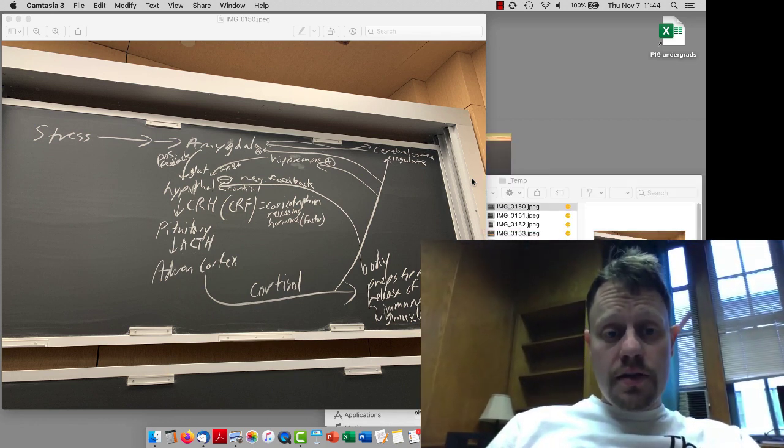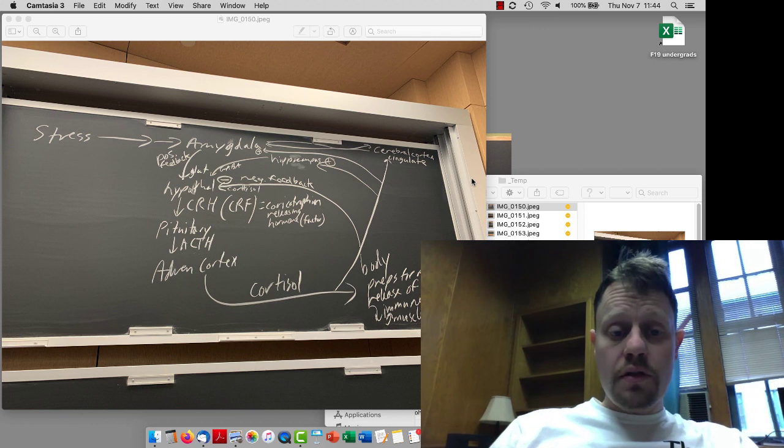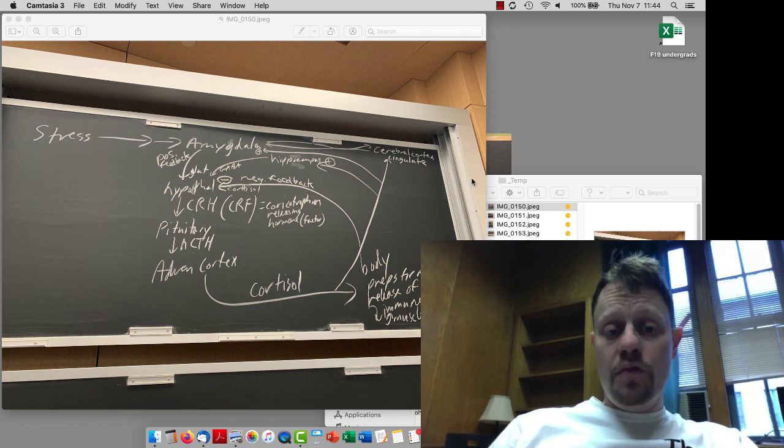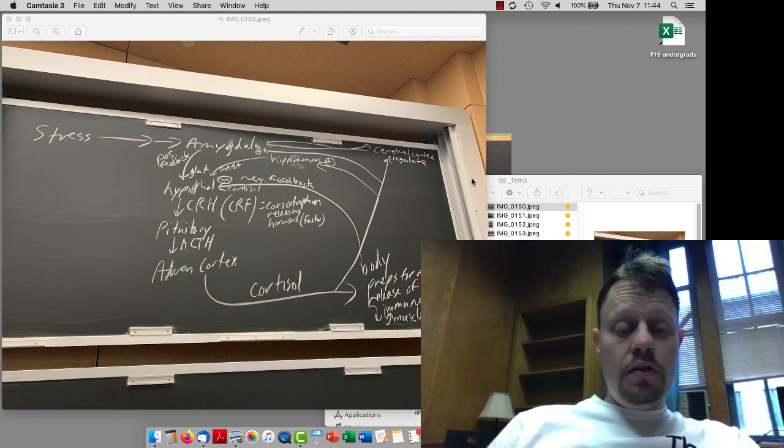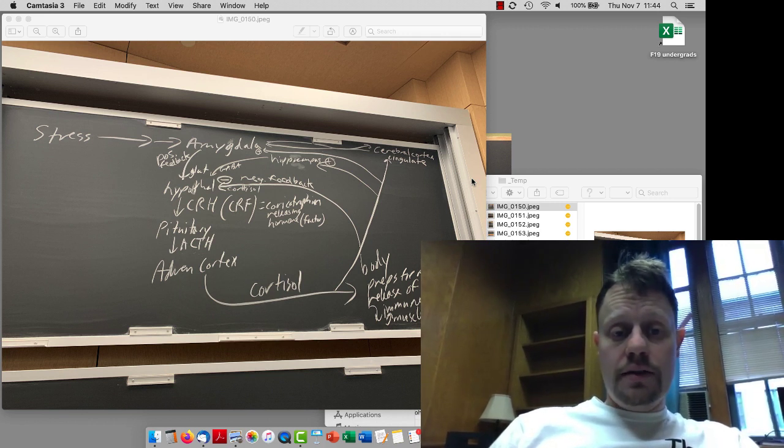So we've talked a lot about stress and the various aspects of stress, including cortisol and cortisol feedback. Cortisol feedback alterations are one of the main common sources of risk alleles for major depressive disorder and anxiety disorder. And cortisol feedback dysregulation is common in major depressive disorder and anxiety disorders.